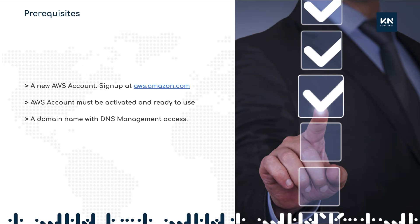First, let's look at the prerequisites. We need an Amazon AWS account that you can simply get by signing up at aws.amazon.com. You simply go through the signup process and fill up information, and you will have a new fresh AWS account. You can proceed with the activation if there is anything pending. You also need DNS management access to your domain name — for example, yourcompanyname.com. The DNS management access is usually provided by the domain name registrar, from wherever you registered the domain name.